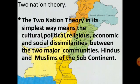What is the Two-Nation Theory? In its simplest meaning, the Two-Nation Theory refers to the cultural, political, religious, economic, and social differences between the two major communities — Hindus and Muslims of the subcontinent. There were two nations built by these cultural, political, religious, economic, and social differences. This is the basis of the Two-Nation Theory.